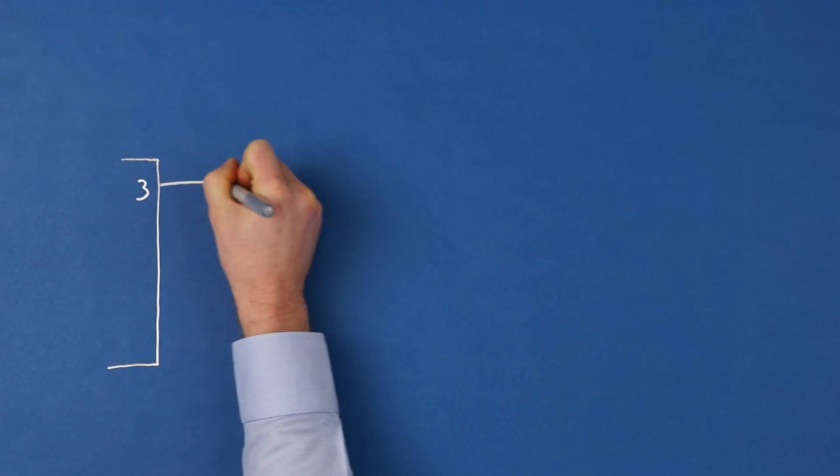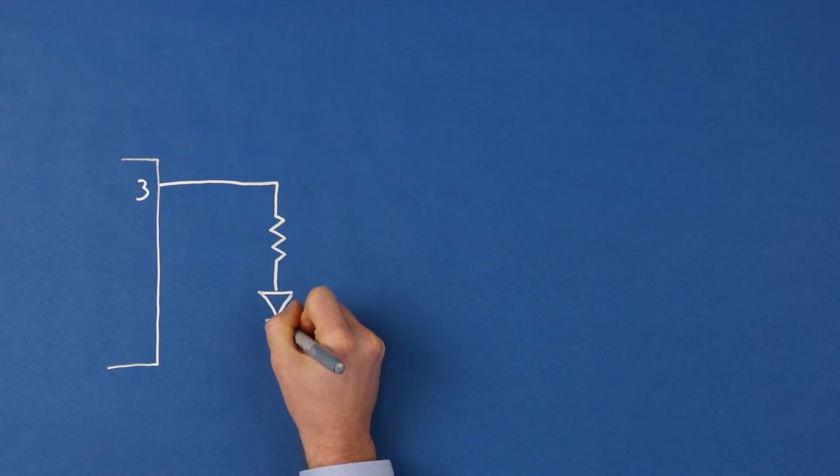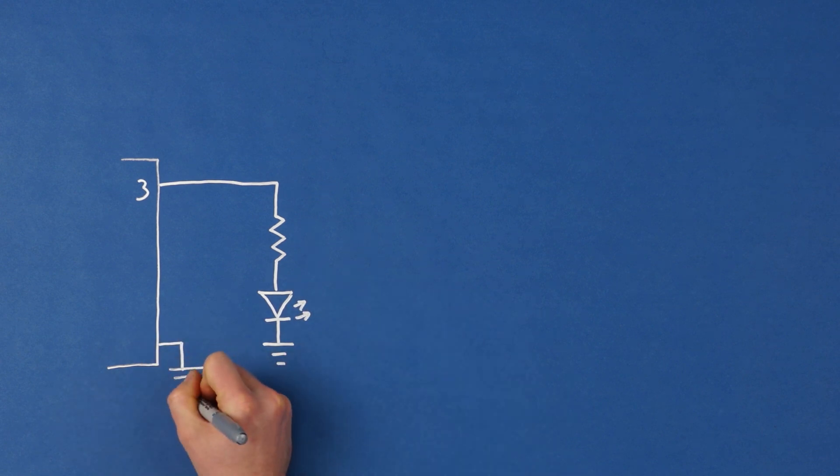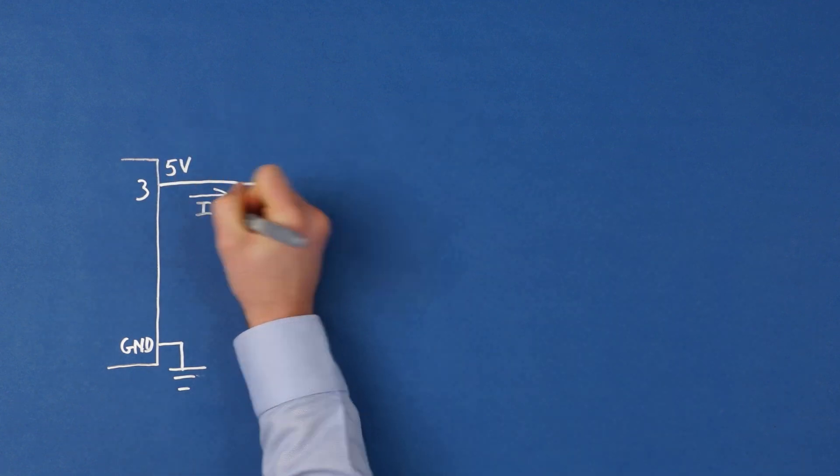Let's say we have something controlling the voltage of the LED, like pin 3 on an Arduino. We add the resistor in series with the LED. This resistor resists the flow of current as it flows through the LED and back to the Arduino through the ground pin.